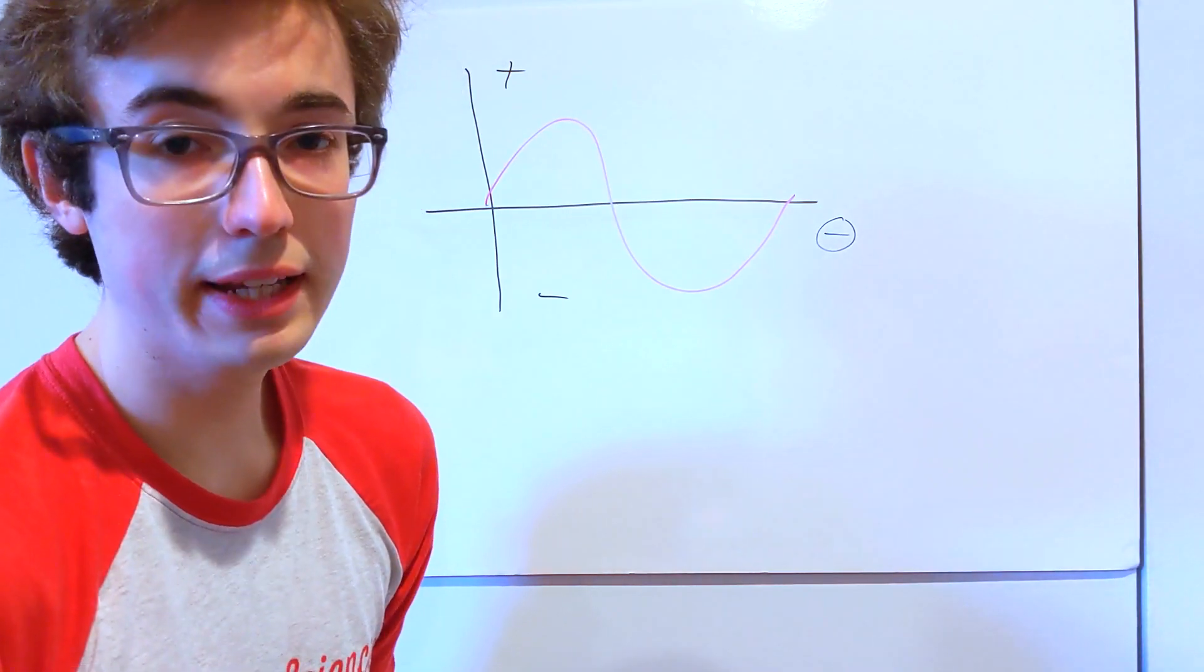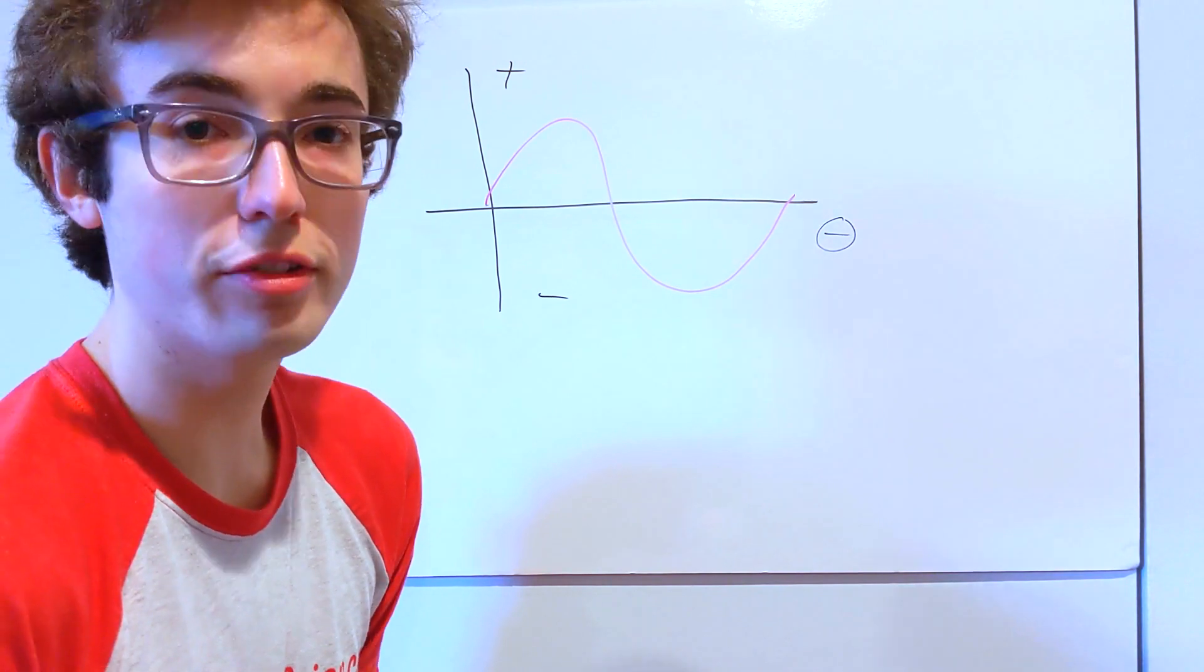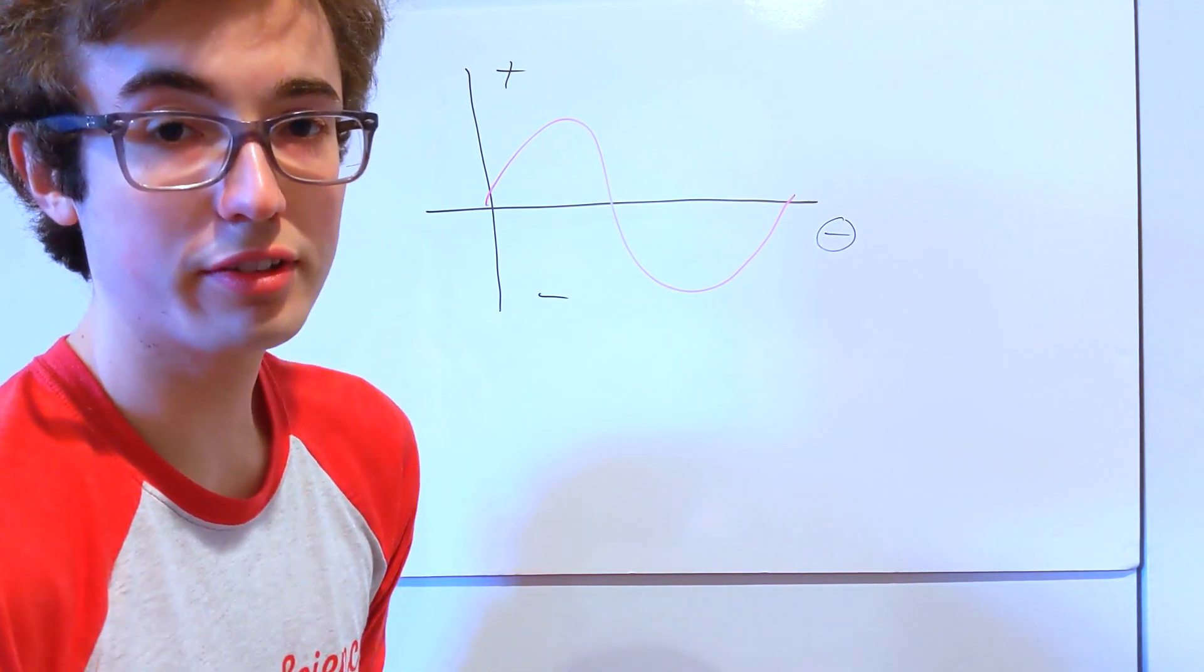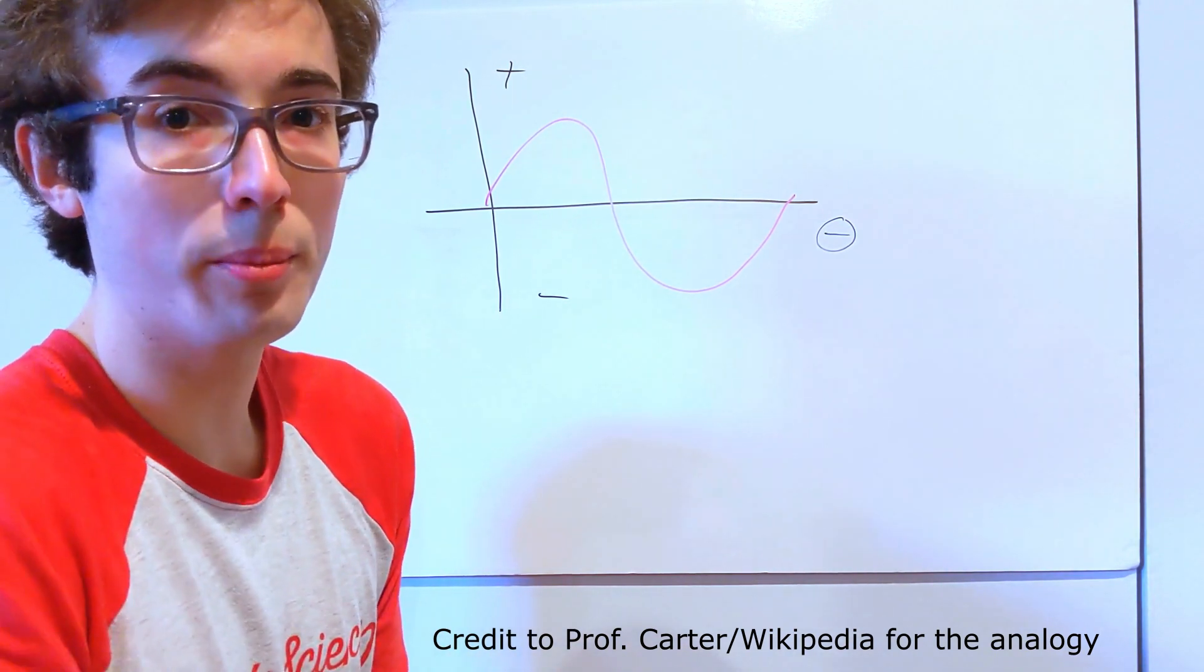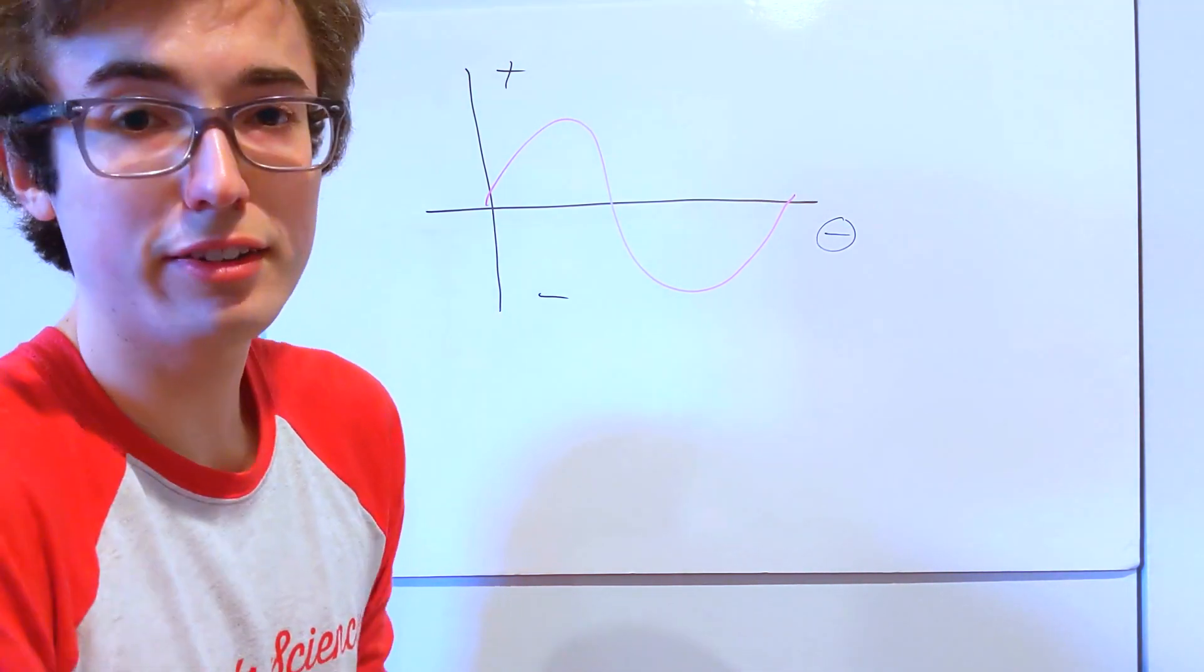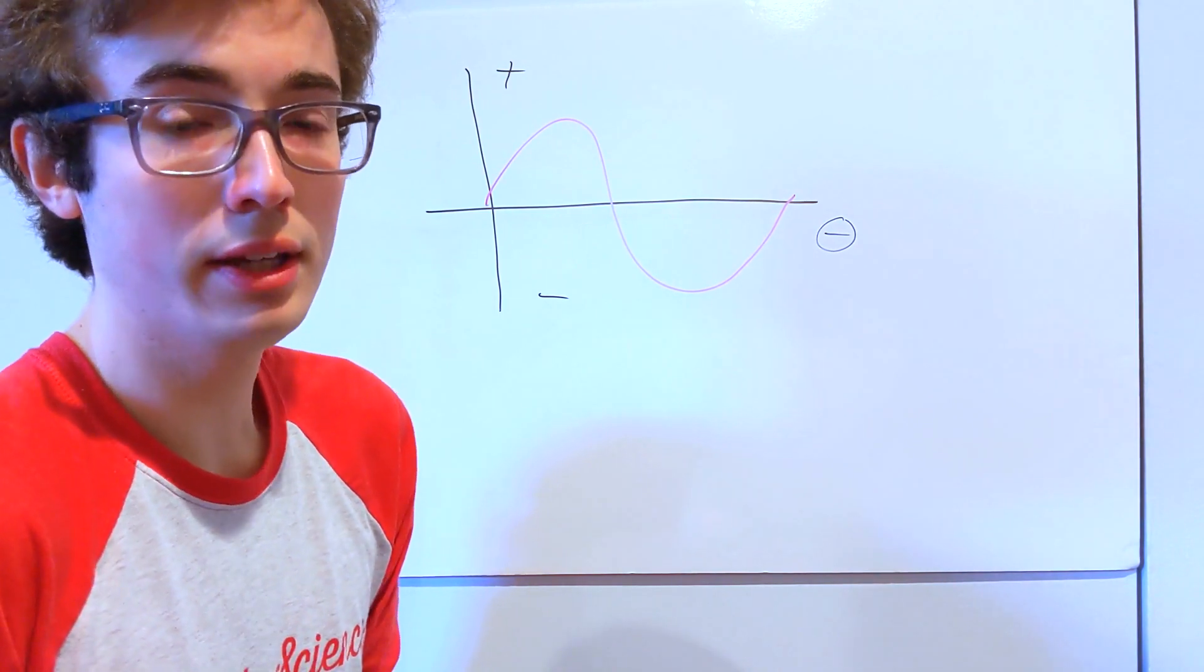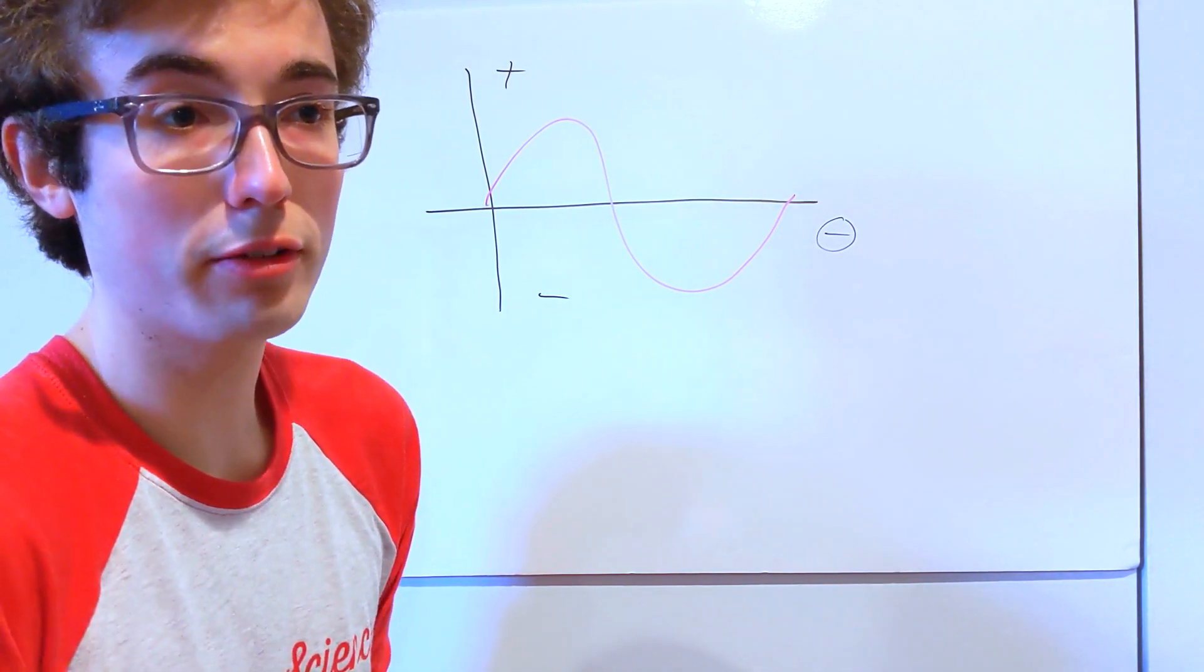I find that the easiest way to explain how a metadynamic algorithm works is to use the computational sand analogy. So imagine that you have a big empty bathtub, or maybe it's like some mold or some surface, that's your free energy surface in the analogy, and you want to get an idea of what its topography looks like.